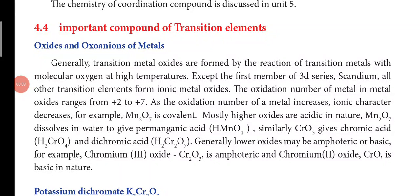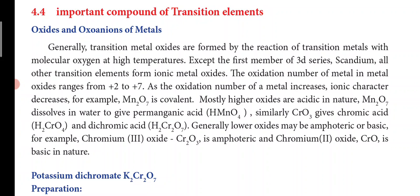Good morning students. Last class we discussed magnetic properties, catalytic properties, alloy formation, interstitial compounds, and how to de-block elements from complexes. Today we are going to see the important compounds of transition elements. The two major compounds we will discuss are potassium dichromate and potassium permanganate — their preparation, properties, uses, and their structures including the permanganate ion and chromate ion structures.